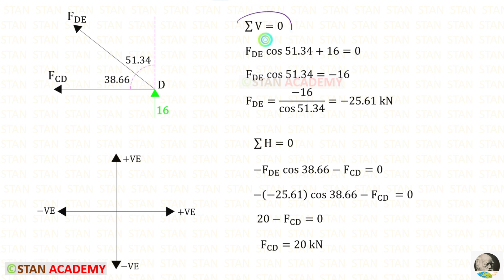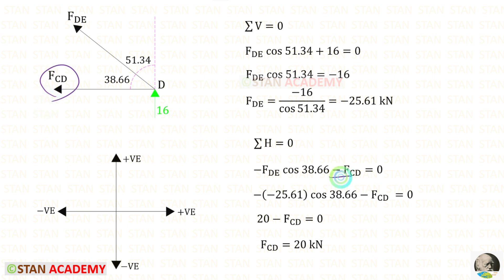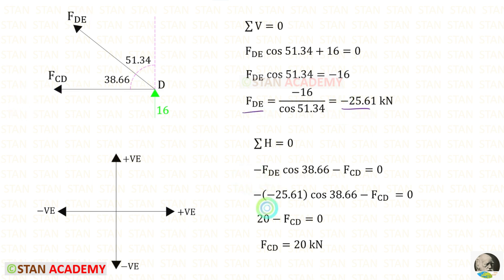In joint D, first we have to use sigma V equals 0 because there will be only one unknown. VED is acting upwards, so it will be positive. FDE is inclined; we have to resolve it in the vertical direction. To make it vertical, we need 51.34 degrees, so with FDE we have to multiply cos 51.34. It is acting upwards, so it will be positive. For FDE, we will get minus 25.61. Let us apply sigma H equals 0 and find FCD. FCD is acting towards the left side, so it will be negative. FDE is inclined; to make it horizontal we need 38.66 degrees, so with FDE we have to multiply cos 38.66. It will be acting towards the left side, so it will be negative. Negative into negative, it will become positive. For FCD, we will get 20 kN.